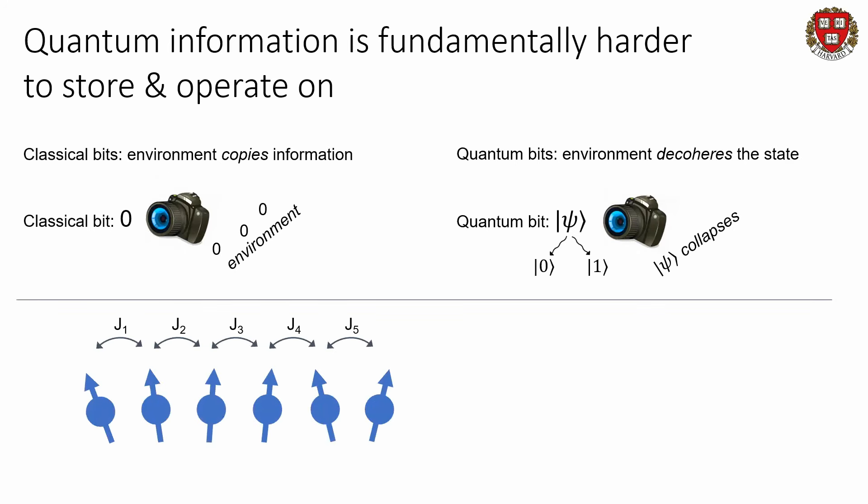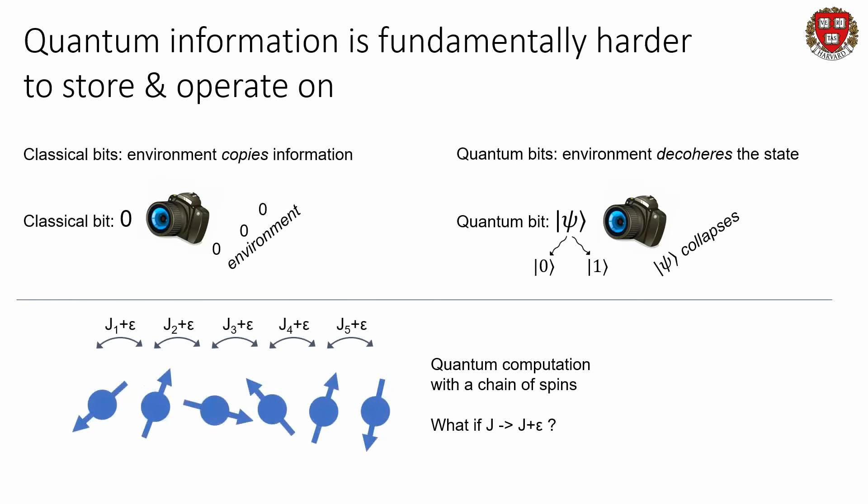Another key challenge: imagine you're trying to do some type of quantum computation with a chain of spins. These spins are your two-level system forming your quantum computer. You might very precisely tune all the interactions between the spins to produce some quantum computation output, but what happens if you're just off by a little bit and you have some epsilon error on all of the interactions? Then the spins are going to chaotically go into a very different state, not the one you intended. You're very sensitive to miscalibration errors or small rotation errors.